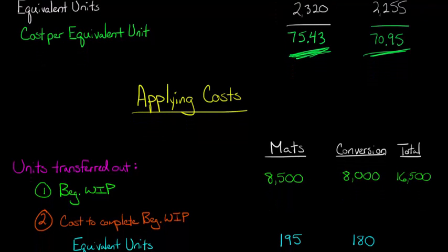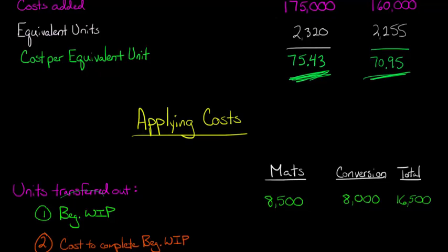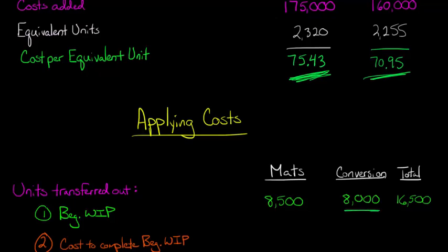So now for units transferred out, there's a lot going on so stay with me. We're going to start with our beginning work in process. If you're working a problem in a managerial accounting book, this will typically be given. For direct materials, let's say $8,500 is in the beginning WIP account, and for conversion costs it's $8,000. Conversion costs are just direct labor plus manufacturing overhead added together. So our beginning WIP, adding those two together, gives us $16,500.